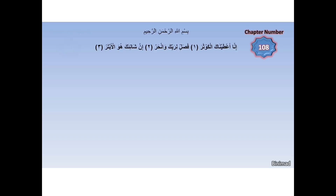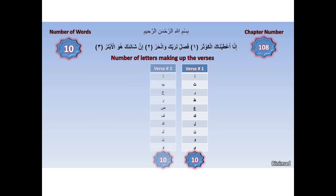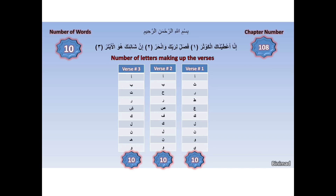This chapter contains a total of ten words. The number of distinct letters that make up the first verse is also ten — for example, in English the word 'call' is made up of three distinct letters even though it contains four, because L is repeated. The second verse is also made up of ten distinct letters, and amazingly the third verse too is made up of just ten distinct letters. The first letter of the chapter repeats throughout the chapter ten times, and it is also the letter that appears most — so the maximum number of repetitions for any letter in the chapter is also ten.